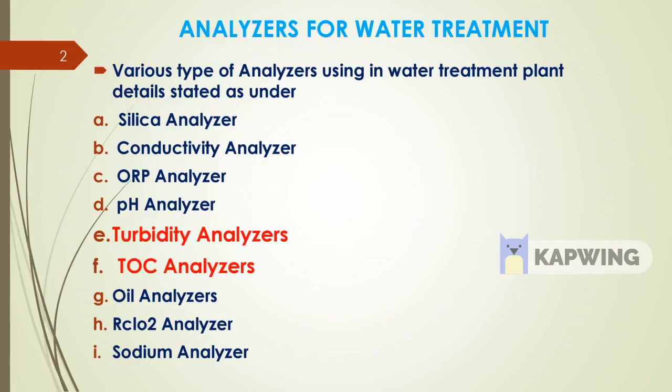Various types of analyzers used in water treatment plants have been discussed previously. We covered silica, conductivity, ORP, and pH analyzers. In this video, we discuss turbidity and TOC analyzers — their measurement principles — as well as oil analyzer, RCL auto analyzer, and sodium analyzer, which will be covered in chapter 3.